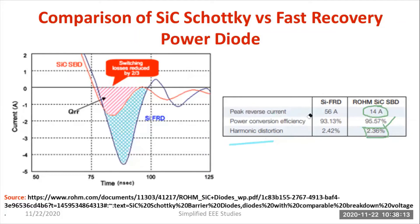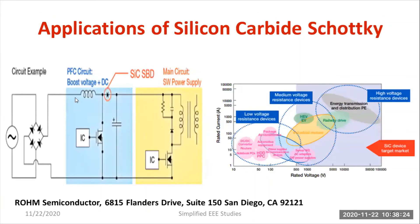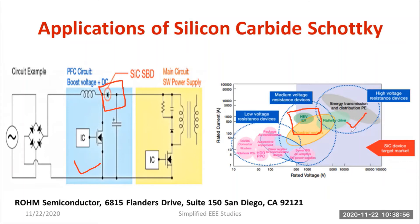Now let us study the applications of SiC Schottky diode. It is mainly applicable for power factor correction type boost converters, where it prevents reverse power flow. You can see the PFC type boost converter and the position of the silicon carbide Schottky diode. Moreover, it is suitable for low voltage, medium voltage, and high voltage applications. For medium voltage, one application is the hybrid electric vehicle. For high voltage, you can go for railway traction. For low voltage, normal PFC type converters are applicable.